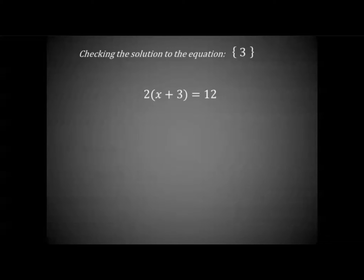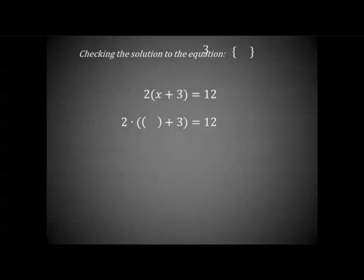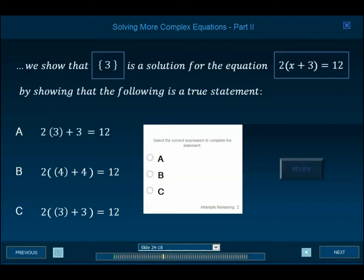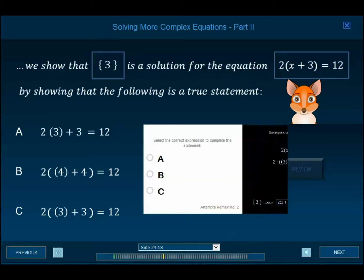Checking the solution to the equation: we think the number 3 is our solution value to the equation 2 times the quantity x plus 3 equals 12. We check the solution by replacing x with our solution value in the original equation. We show that 3 is a solution for the equation by showing that which of the following is a true statement.